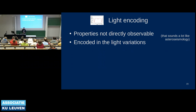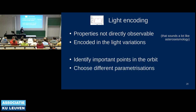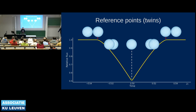These properties cannot be measured directly — they are encoded in the light variations we see during eclipses. To find them we need to identify important reference points in the orbit and we can also choose different parameterizations, rather than using the orbital and intrinsic properties directly, to help measure these quantities more easily. To illustrate this, I'll start with a system of twins — stars identical in both size and temperature.